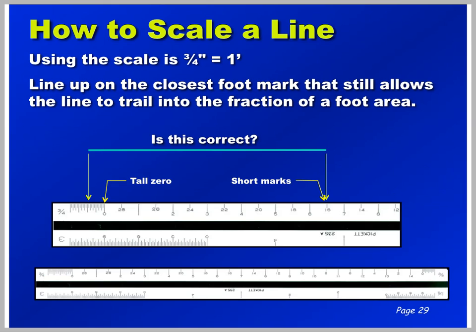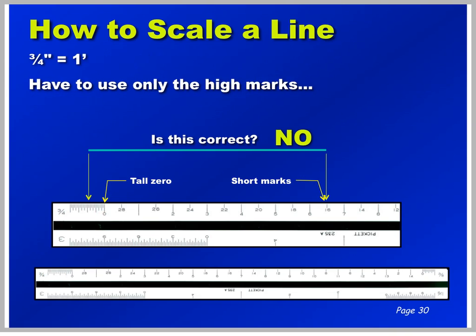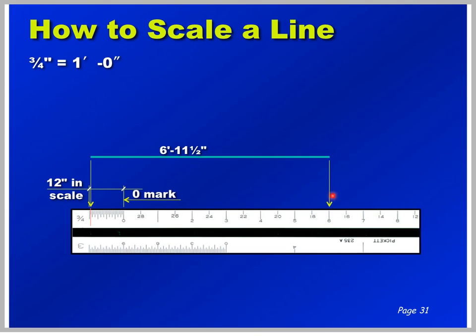Let's have a little bit of fun. Using the 3/4 inch equals a foot scale, measure this line. In this example, we are measuring using the 3/4 inch scale, which uses the high zero marks. We need to make sure we're lined up on the correct mark. We were lined up on a low zero tick mark, so we move it over to the proper high tick mark. We read full feet in this direction — 6 foot — and in this direction we read 11 and 1/2 inches.